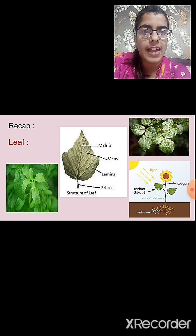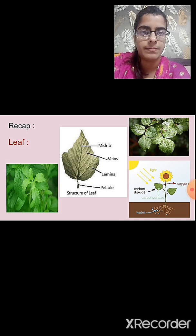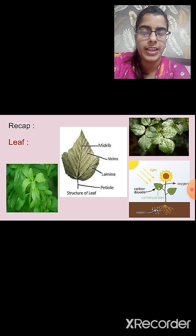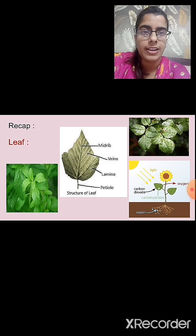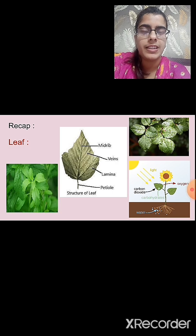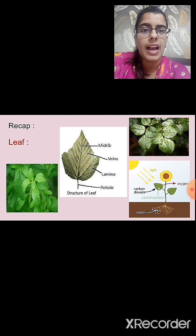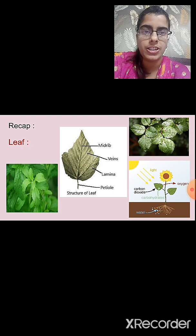On both sides of the midrib, lines are present — these are known as veins. The design made by the veins is known as leaf venation. We studied two types of leaf venation: one is reticulate venation, in which we observe a net-like design on both sides of the midrib, and the other is parallel venation, in which the veins are arranged parallel to each other.